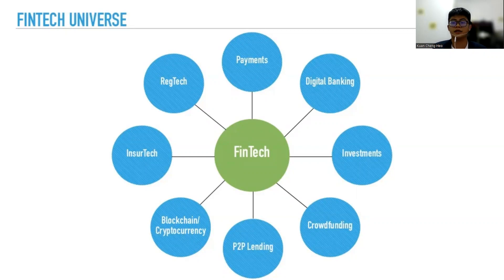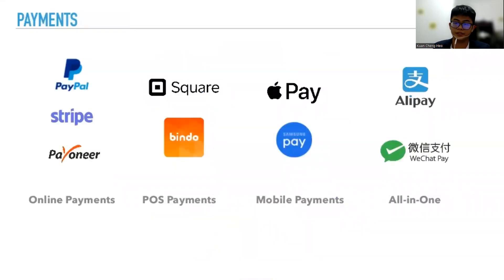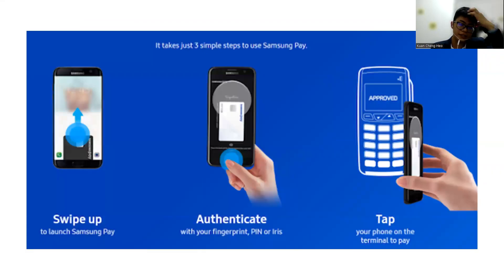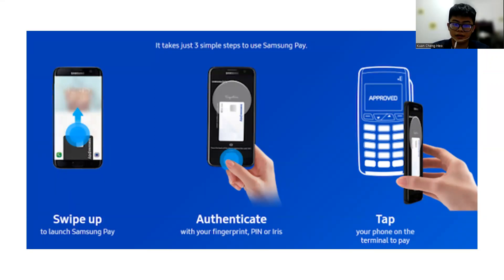So I would like to explain and give an example in the payments. You can see so many digital payments — PayPal, Apple Pay, Alipay in China, WeChat Pay also in China, and Samsung Pay. So I would like to share my most favorite, which is Samsung Pay. It just takes three simple steps, and then you can pay everything for the payments.